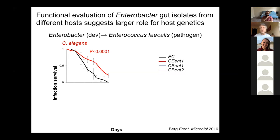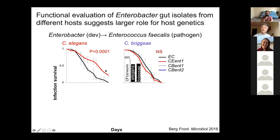Some isolates — and this was not rare — were also providing protection from subsequent infection. We grew worms through development for as little as four hours on a particular Enterobacter isolate (the commensal), then at L4 shifted them to a pathogen — a pathogenic strain of Enterococcus faecalis — and followed their survival. Worms raised on the Enterobacter isolated from C. elegans were protected from subsequent infection compared to worms raised only on E. coli. But surprisingly, the same commensal that protected C. elegans was unable to protect C. briggsae, although it was equally capable of colonizing C. briggsae gut.